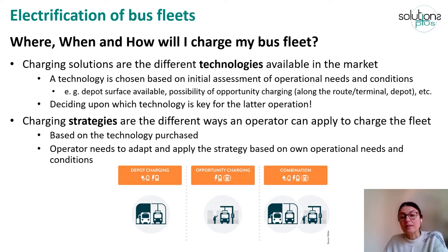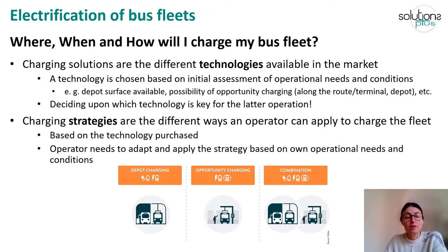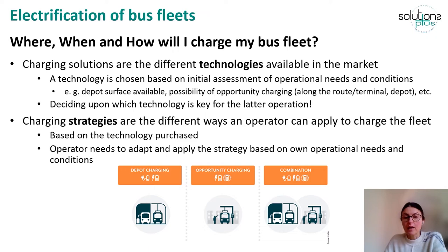The charging strategy is how you charge your fleet. It is, of course, based on the technology you have chosen and purchased, and it will be re-adapted if needed based on the operational needs and conditions of the line. Here, on the bottom of the slide, I'm sharing three different charging strategies. The first one would be depot charging only, which means everything related to charging happens at the depot, and it can be done with the manual plug or with automated connection devices like roof-mounted pantographs.